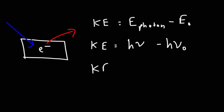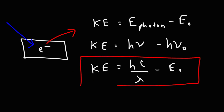We can write the equation replacing frequency with the speed of light divided by the wavelength. So if you know the wavelength of light striking the metal and you know the work function or threshold energy of the metal, you can calculate the kinetic energy of the ejected electron.